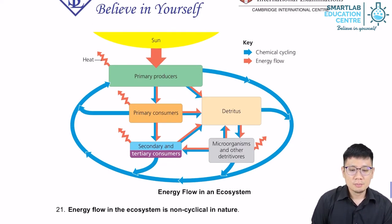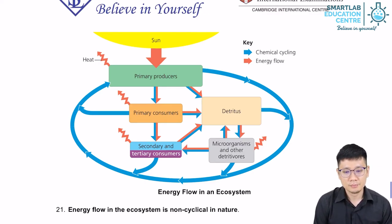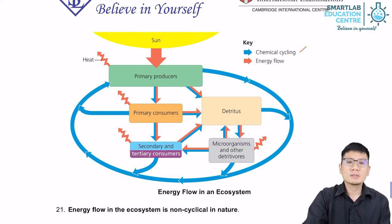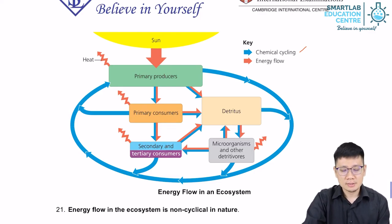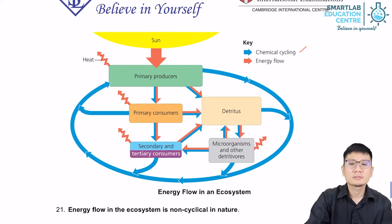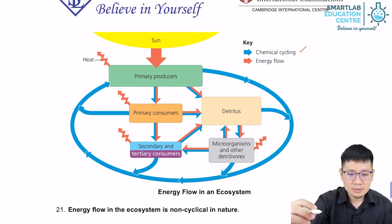This picture shows the energy flow in an ecosystem. There are two different arrows that are color-coded. The blue arrow represents chemical cycling. Chemicals refer to matter — all atoms and molecules are matter, all physical objects are matter.